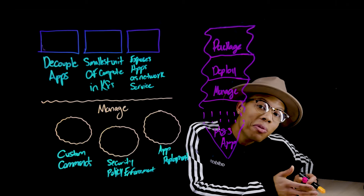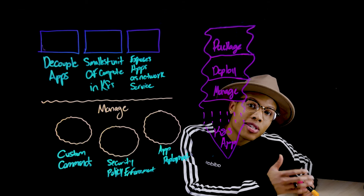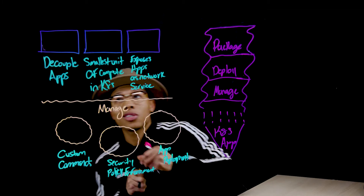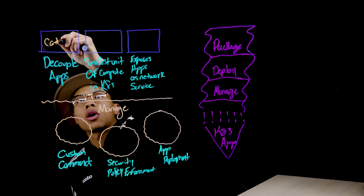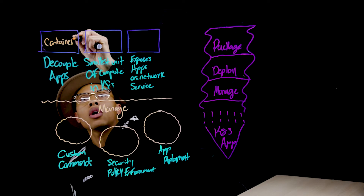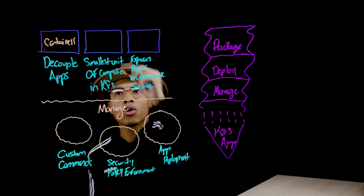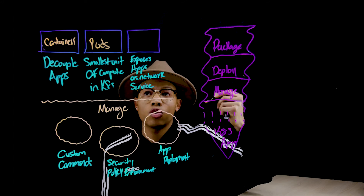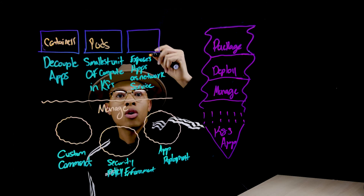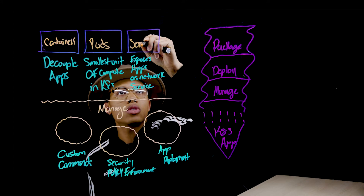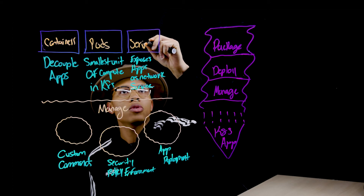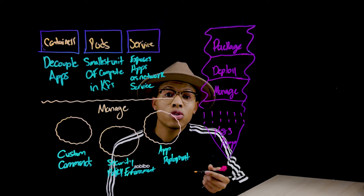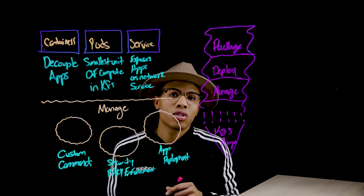So out of the box, you can examine app performance in the Kubernetes cluster by keeping an eye on components like containers, which are basically decoupled apps. Or you can even think about pods, which are the smallest unit of the Kubernetes architecture. Or you can even look at services, which basically expose apps as a network service in your cluster.